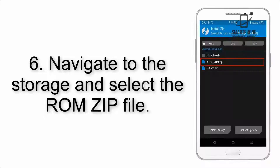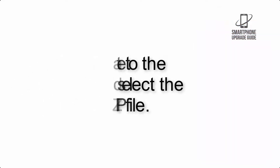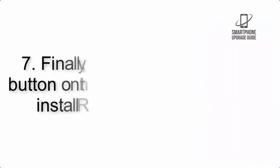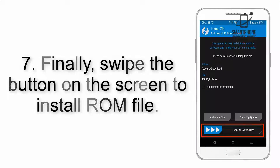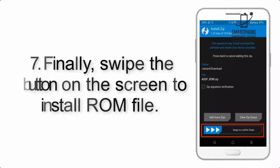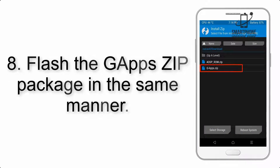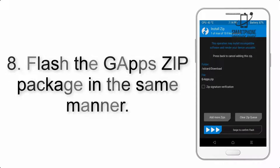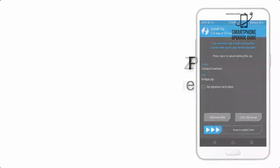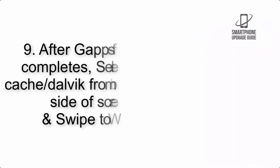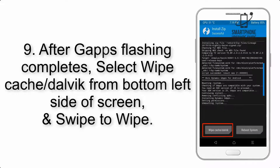Step 5: Go back to the recovery main screen and tap on the Install button. Step 6: Navigate to the storage and select the ROM zip file. Step 7: Swipe the button on the screen to install the ROM file. Step 8: Flash the GApps zip package in the same manner.